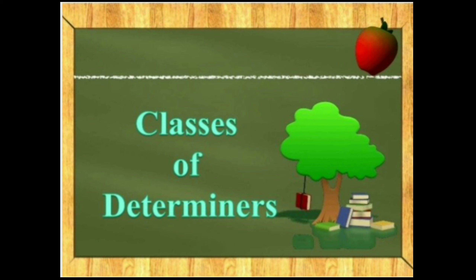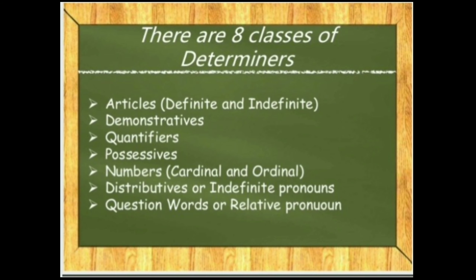Let us move to the classes of determiners — or we can say kinds of determiners. There are eight classes: articles (definite and indefinite), demonstratives, possessives, quantifiers, numbers (cardinals and ordinals), distributives or indefinite pronouns, and question words or relative pronouns.